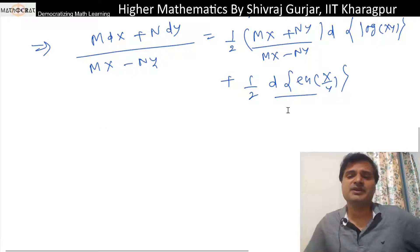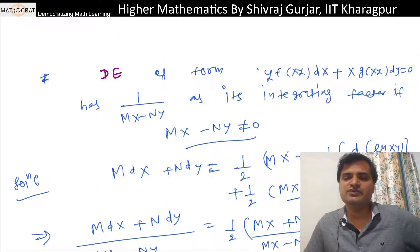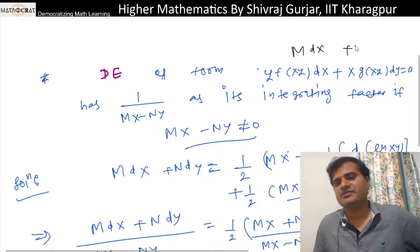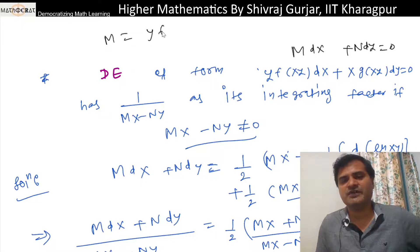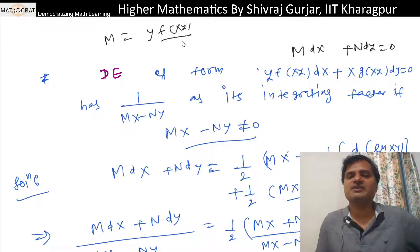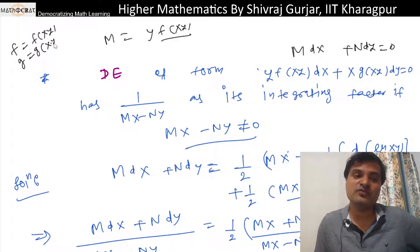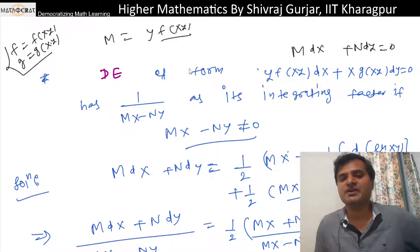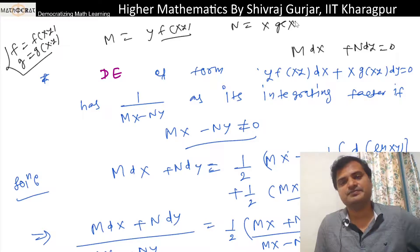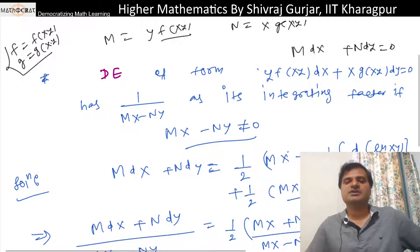Now let's compare — if we compare this with Mdx + Ndy = 0, we can say that M is nothing but y·f(x,y) — that is, a function of f times x·y. And N is x times g(x,y). So M becomes y·f(x,y) and N becomes x·g(x,y).